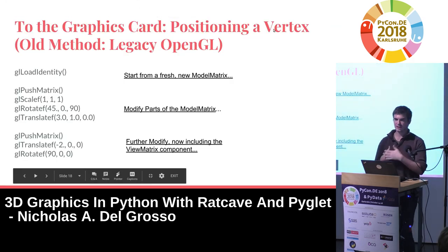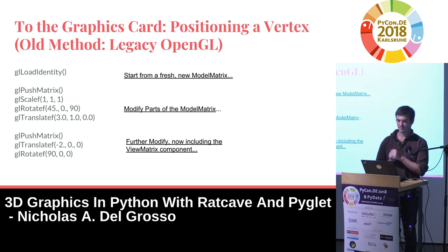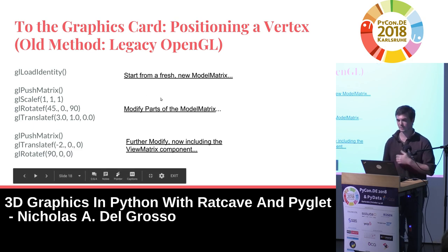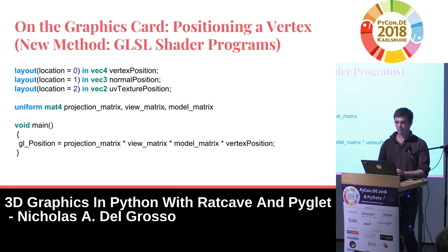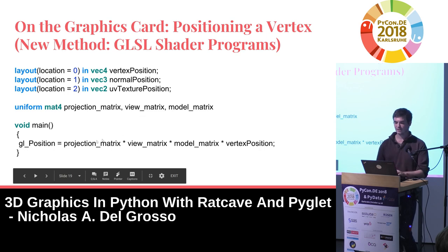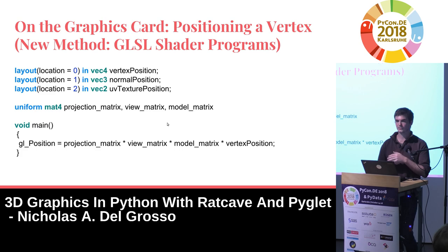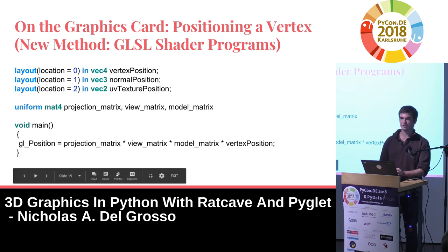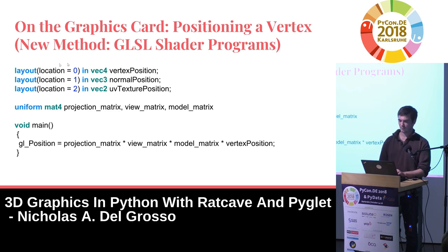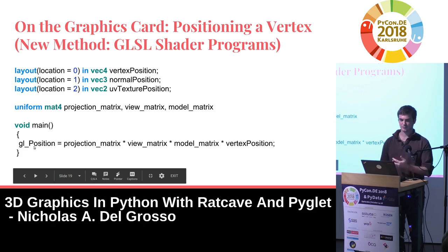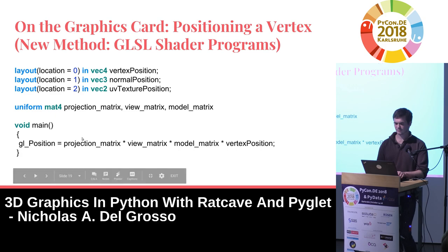In old-style OpenGL, you would set all these matrices internally on the graphics card by calling one function at a time — scale the object, rotate it, translate it, starting with an identity matrix. But this was a lot of calls. Modern OpenGL looks different: you have a shader program where you have full control of the pipeline. This is called a vertex shader — it's a program run once for every single vertex, and you can pass data into it from your CPU. The vertex shader is used to set where something is going to appear on the screen, and it implements the model-view-projection matrix algorithm.